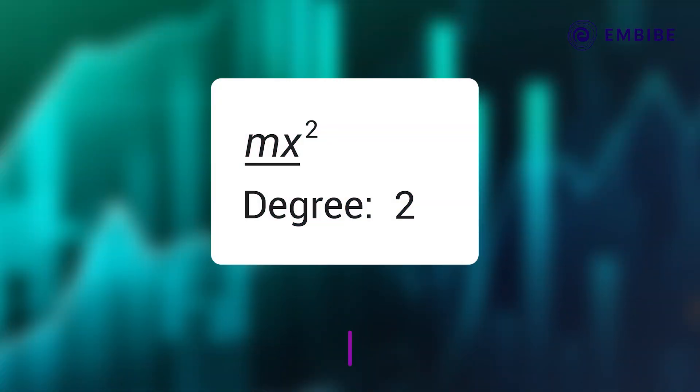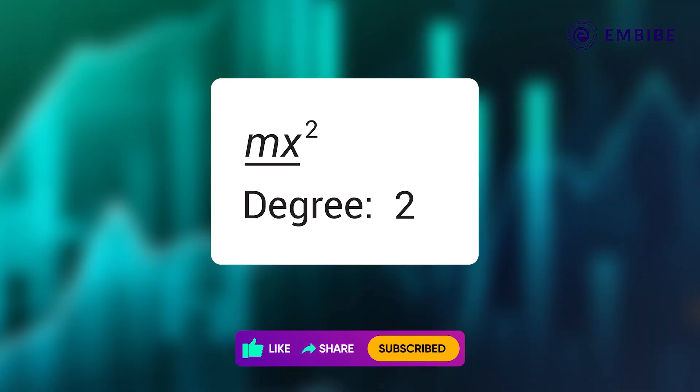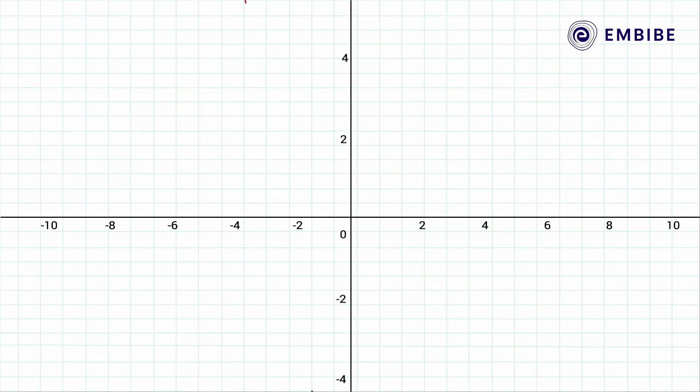That's because the term with the highest degree is mx squared—the exponent is 2. Whenever you have a quadratic equation in one variable x, the graph will be a parabola. A parabola is a curve.